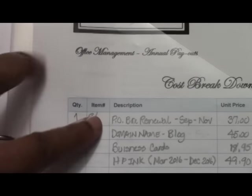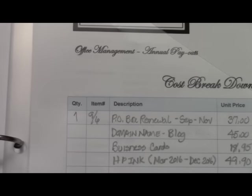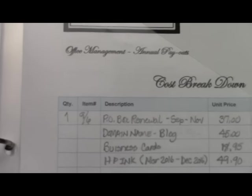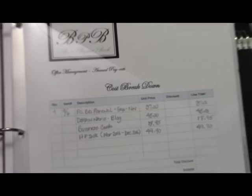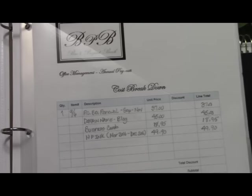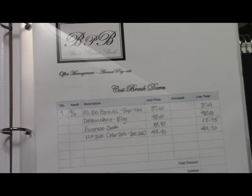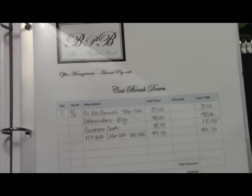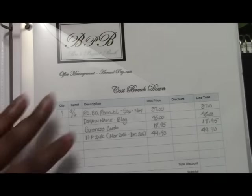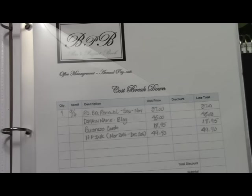It shows how much I pay for my P.O. box renewal, domain name, business cards, ink for the printer, and so on. Each line item has a cost and a total. This is very important for my accountant because he needs to see these line items to correctly put the cost where needed. I keep all my receipts attached on the back for each line item. You want to have all your receipts together and make copies. Once tax season is done, I scan them into my computer because receipts fade over time and you don't want to lose that information in case you get audited.